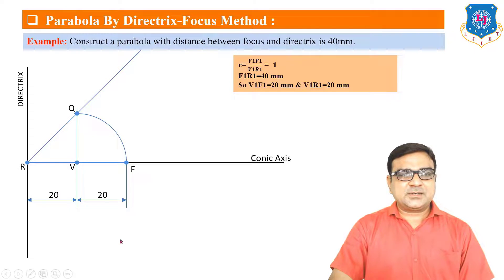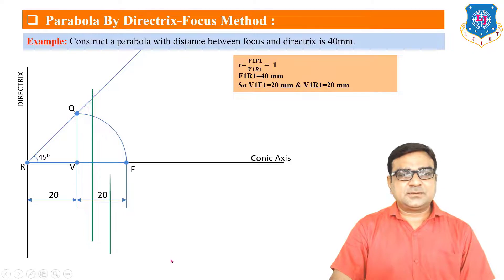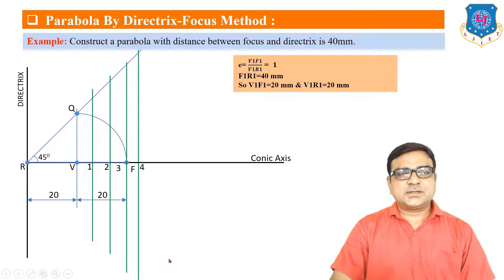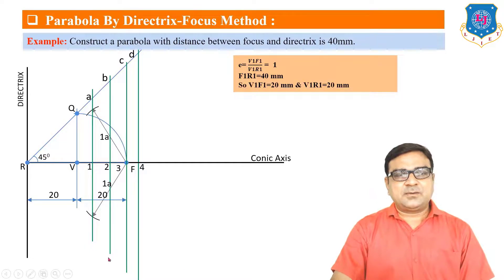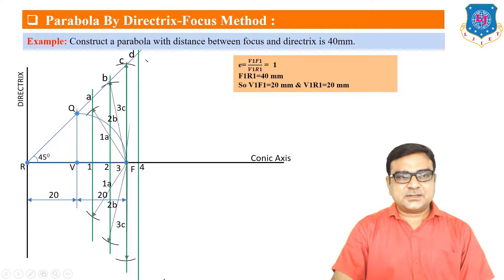With V as center and VF as radius, draw the reference line to point R, and draw a line from R through Q. For parabola, this angle is exactly 45°. On the right side, mark a number of points 1, 2, 3, 4, 5 on the axis. Use radius 1A with F as center to draw an arc on the vertical line through point 1, giving two parabola points. From line 2, take radius 2B with F as center, and continue forward for all points.